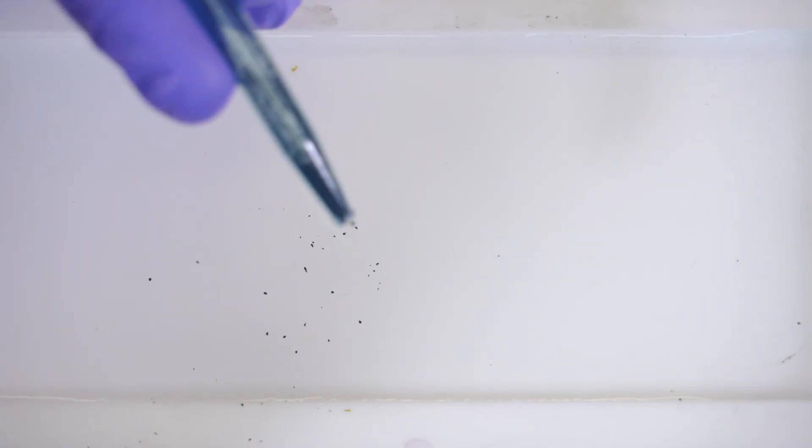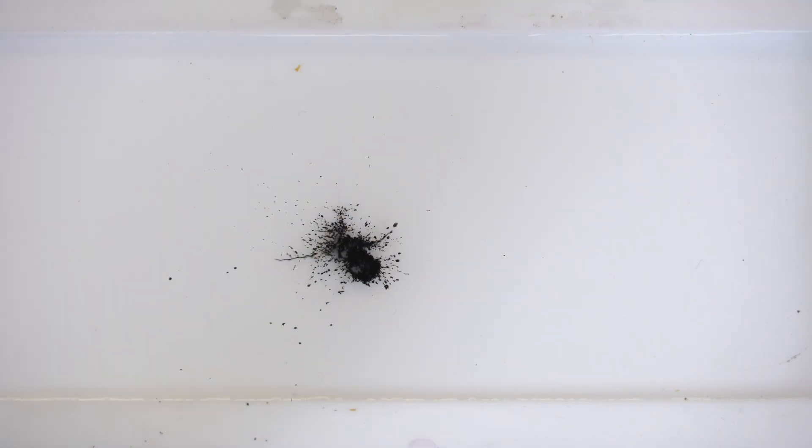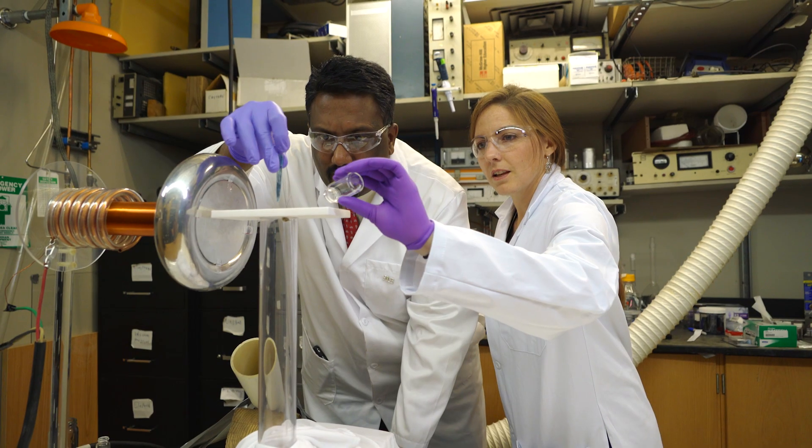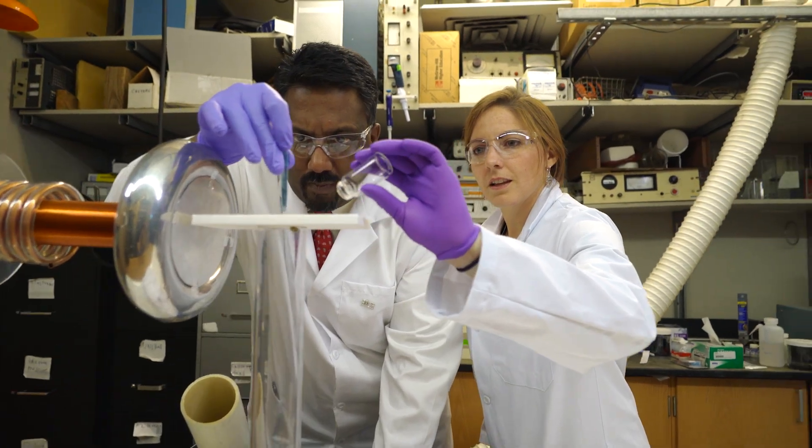And what we did was, because we're at Rice, we had plenty of nanotubes around, so we decided to use nanotubes, and what we discovered was that these nanotubes can actually string together and form wires by themselves under this electric field.